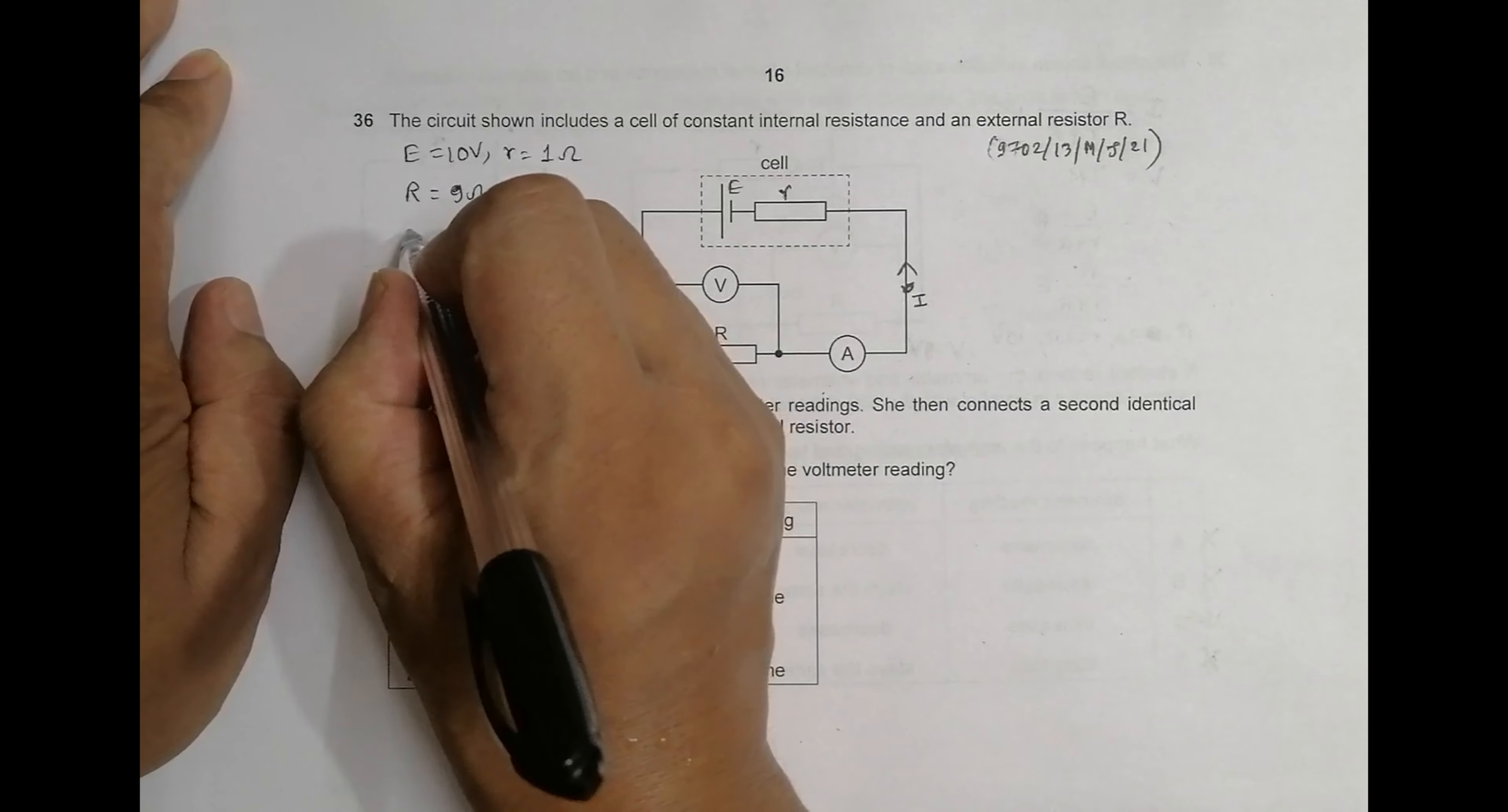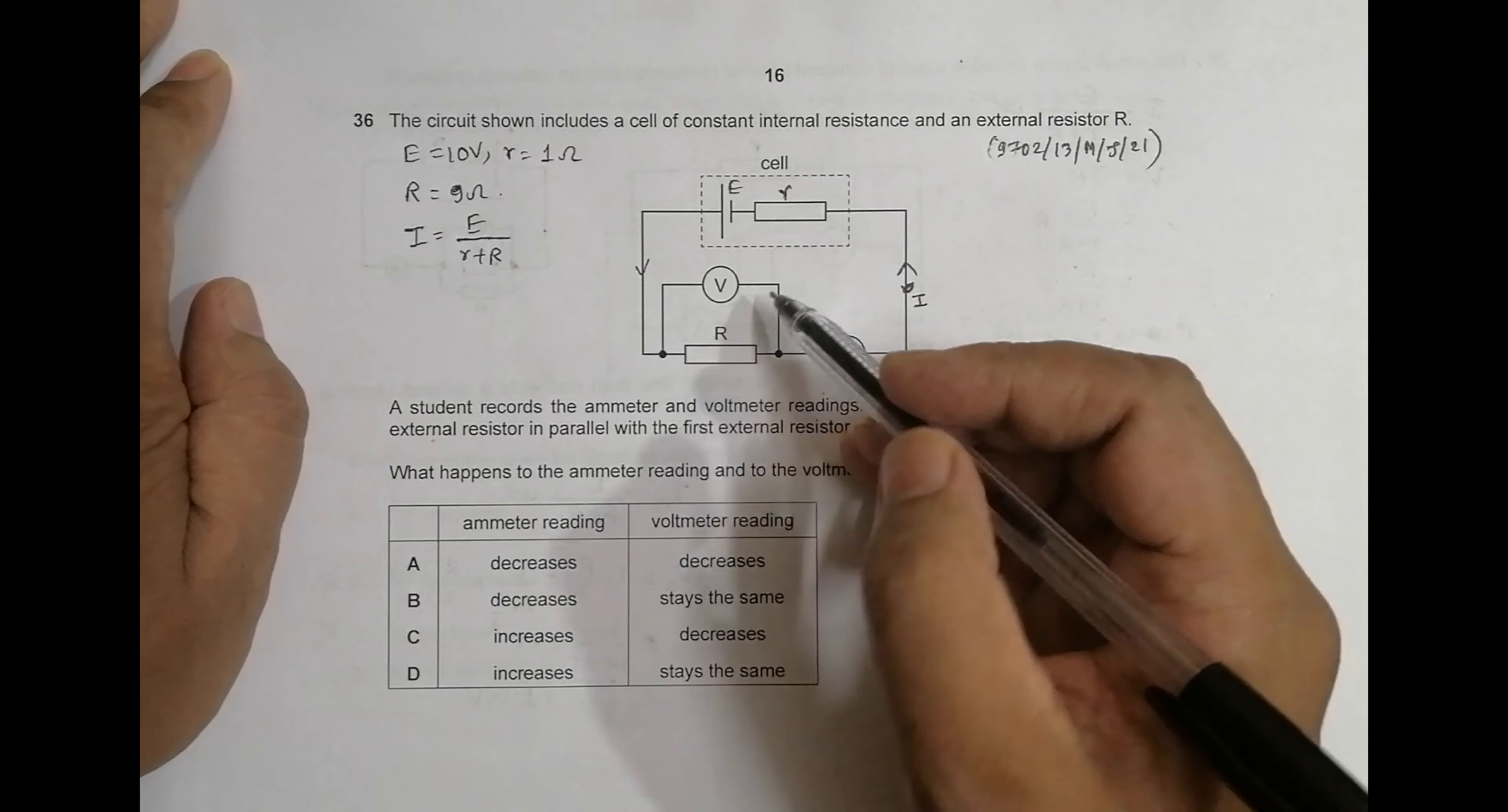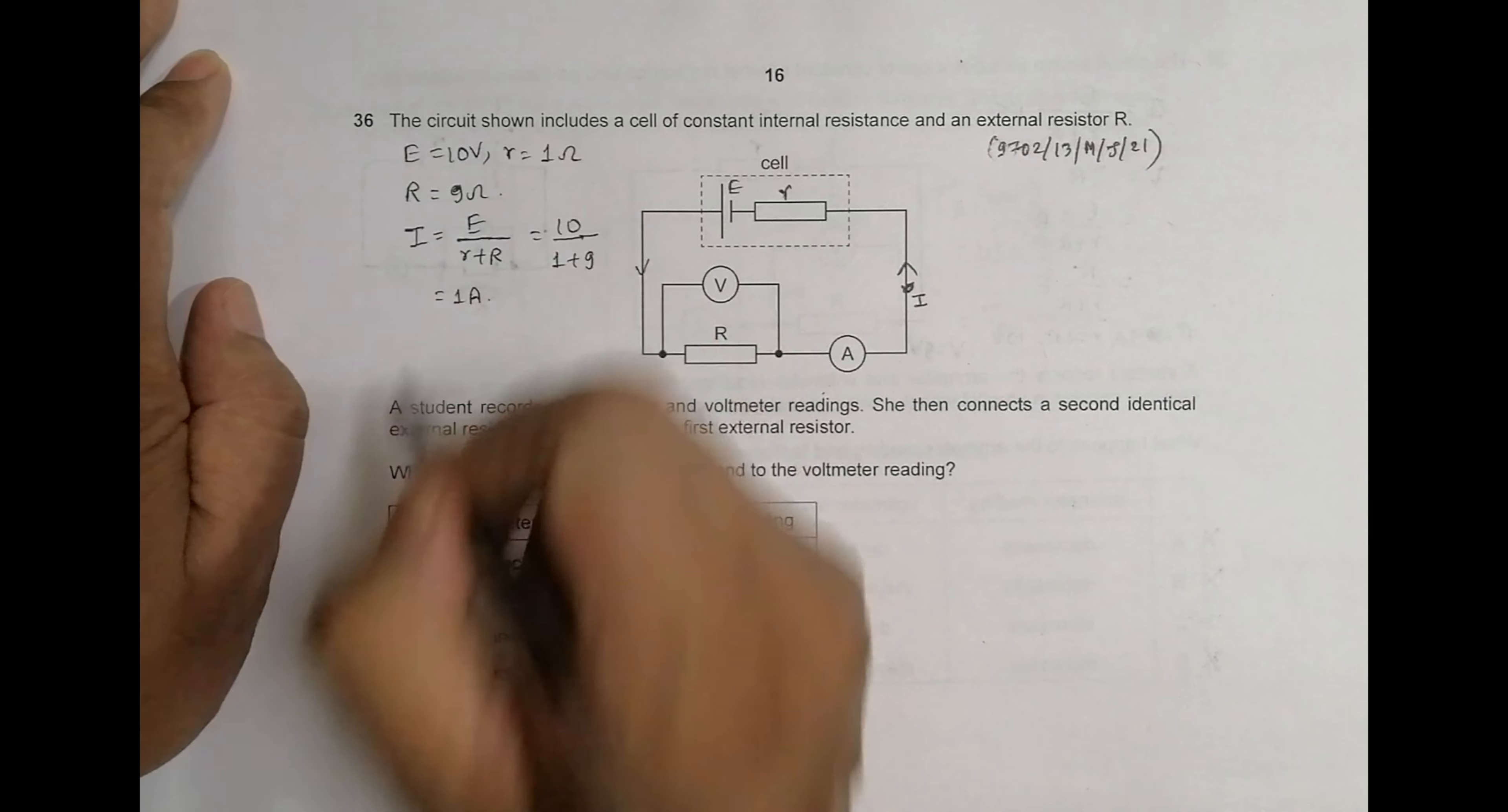Now let me calculate the current here. The current in the circuit, which is read by the ammeter, equals total EMF by total resistance. The total resistance here is small r plus R. In fact, this R and r are in series—they are not in parallel. They appear parallel but they are in series because the same current flows through both of them. So it should be equal to E is 10, and this is 1 plus 9, which is 10 by 10, which equals 1 ampere.